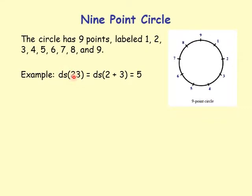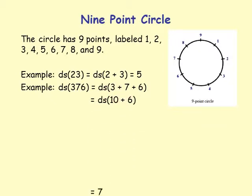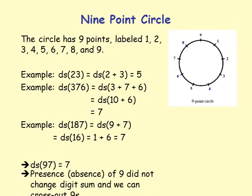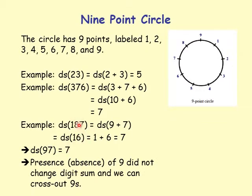Digit sum examples: digit sum of 23 is 2 plus 3 equals 5. Digit sum of 376 is 3 plus 7 plus 6 equals 16, then 1 plus 6 equals 7. For 187: 1 plus 8 is 9, plus 7 gives digit sum of 9 plus 7 — since 1 plus 8 is 9, the 9 drops out, leaving digit sum of 7. The presence or absence of 9 did not change the digit sum; we can cross out 9s when computing digit sums.